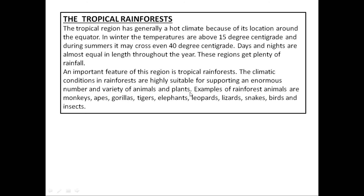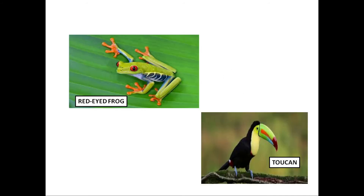An important feature of this region is the tropical rainforest. The climatic conditions in rainforests are equally suitable for supporting an enormous number and variety of animals and plants. Examples of rainforest animals include monkeys, apes, gorillas, tigers, elephants, leopards, snakes, birds, and insects — many of which can be seen at Nandankanan zoo because they are adapted to tropical rainforests.